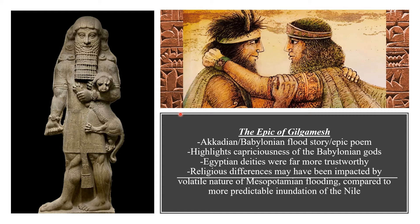Utnapishtim is a Noah-like figure. Utnapishtim tells Gilgamesh that he must eat a magical plant, which Gilgamesh finds, but then the plant is stolen by a snake. In the end, Gilgamesh must be content knowing that he too will die like his friend Enkidu. As you can see, it's a story that doesn't have a very happy ending.